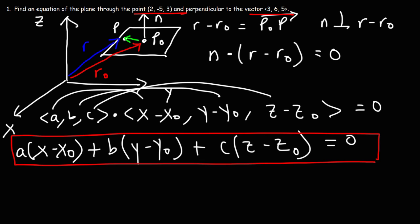So A, B, and C, that's 3, 6, and 5. X0 is 2. Y0 is negative 5. Z0 is 3. So we just got to plug that in into that formula.